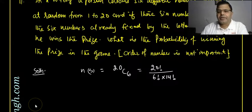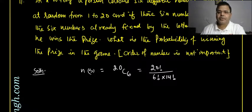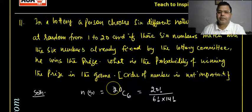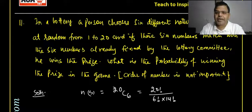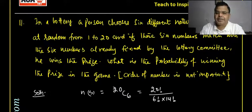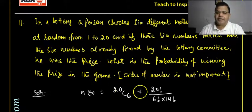The very first question today: in a lottery, a person chooses six different natural numbers at random from 1 to 20. If the six numbers match with the six numbers already fixed by the lottery committee, he wins the prize. What is the probability of winning the prize?